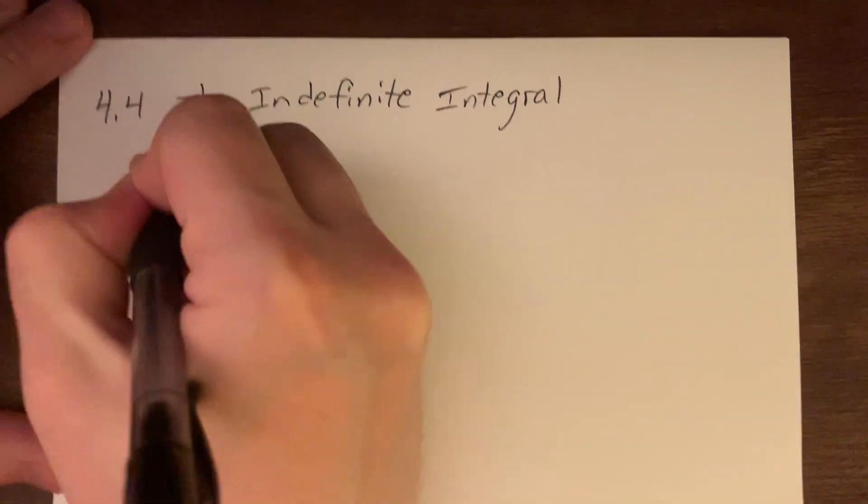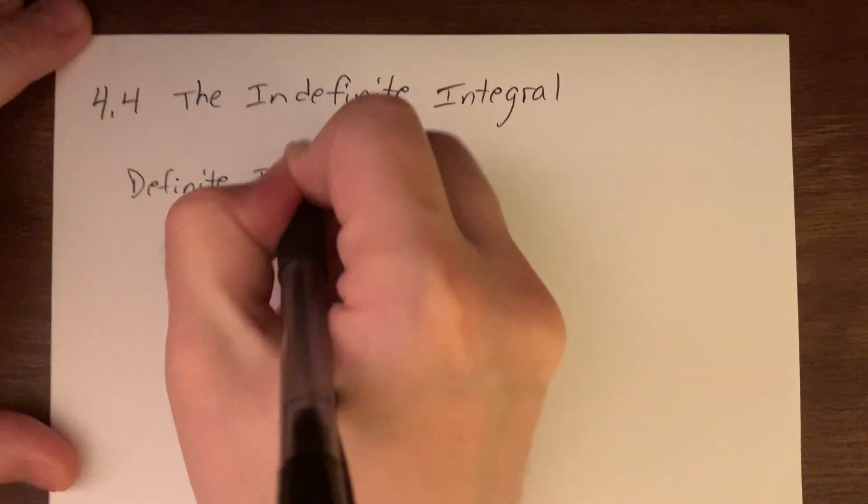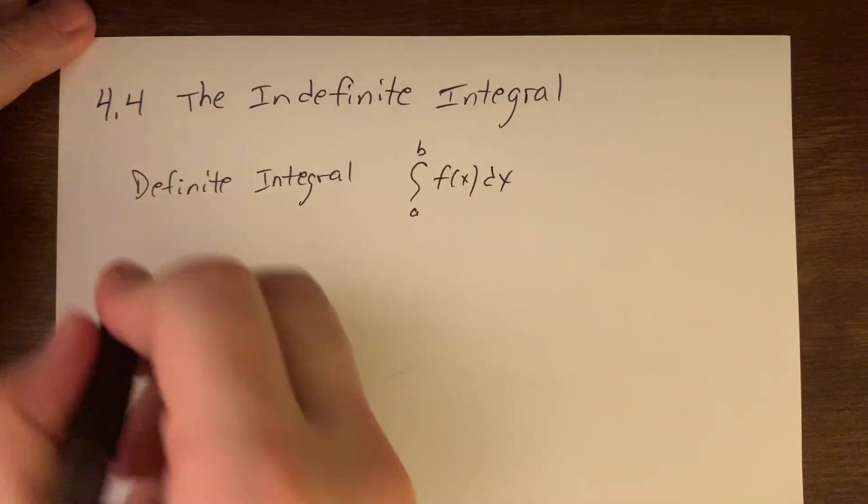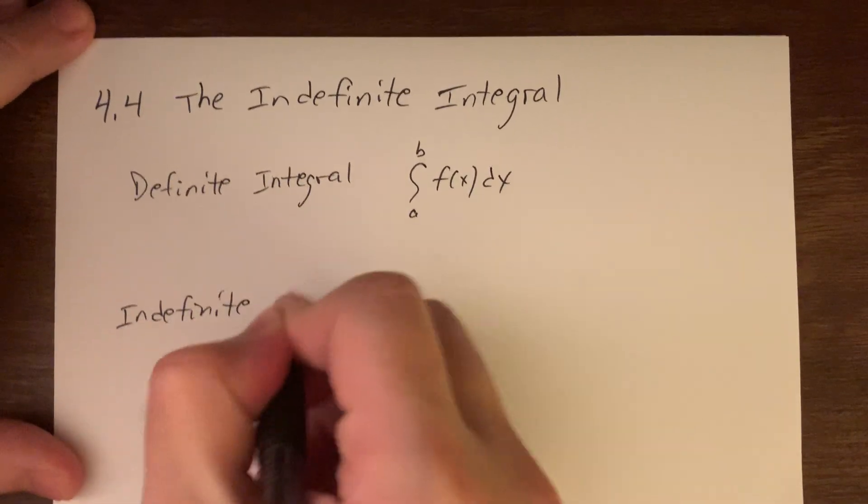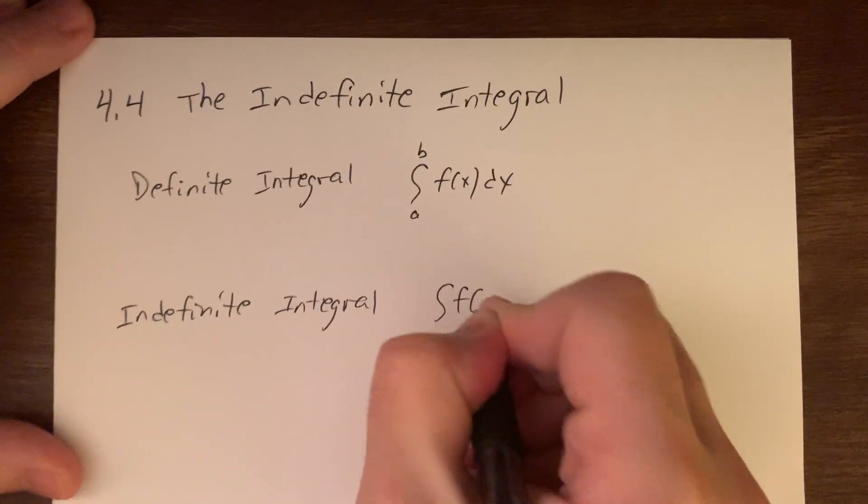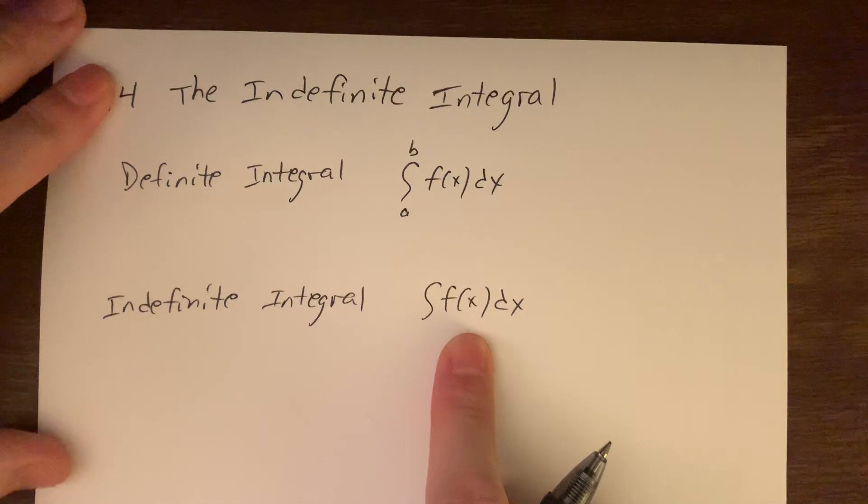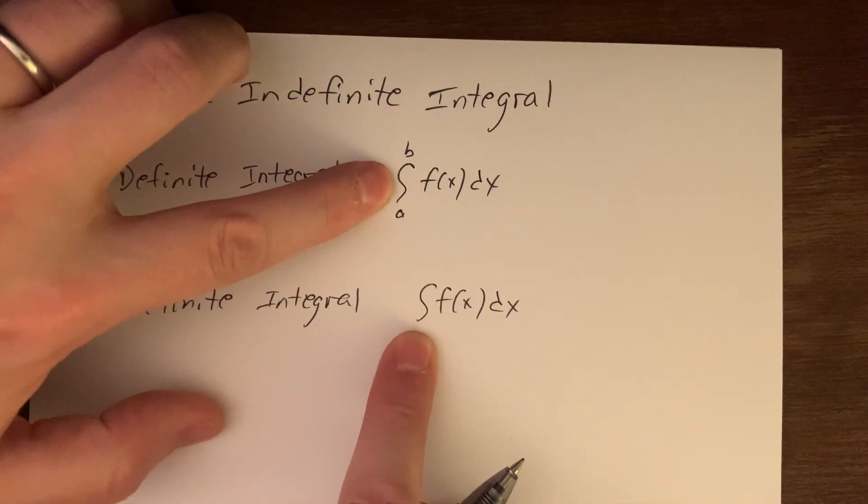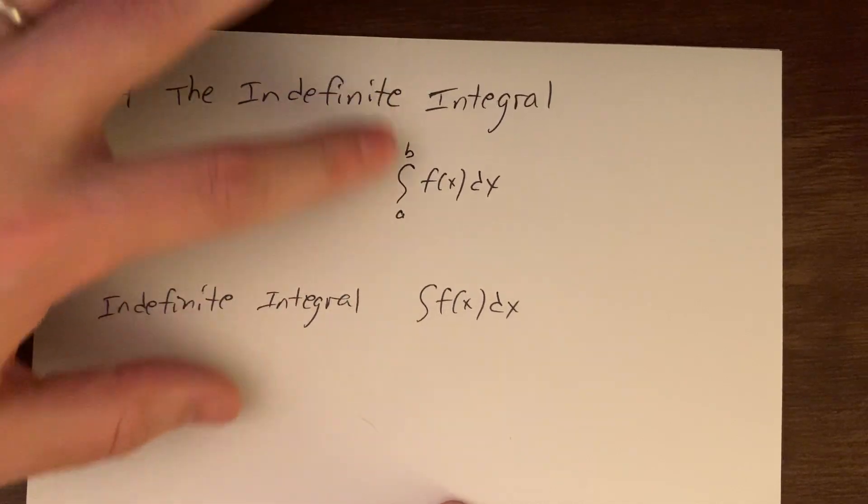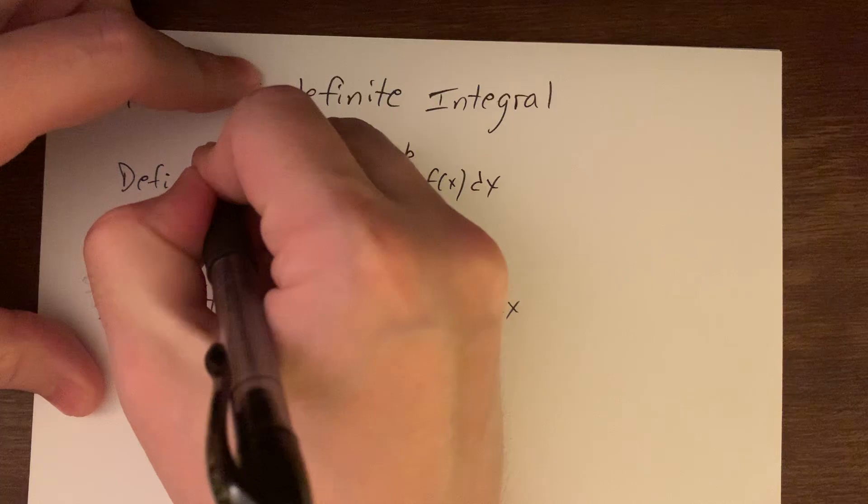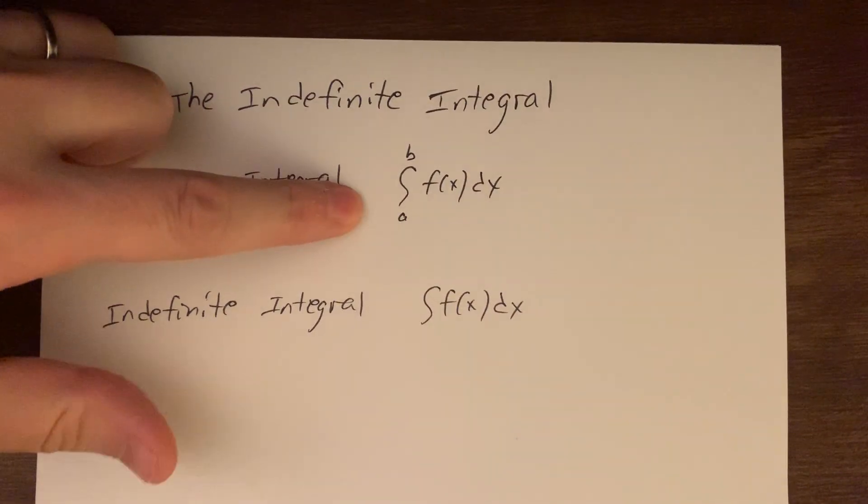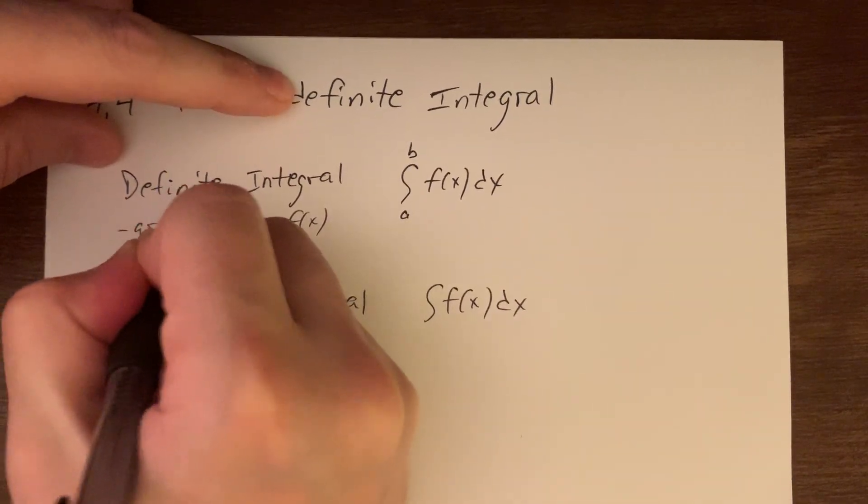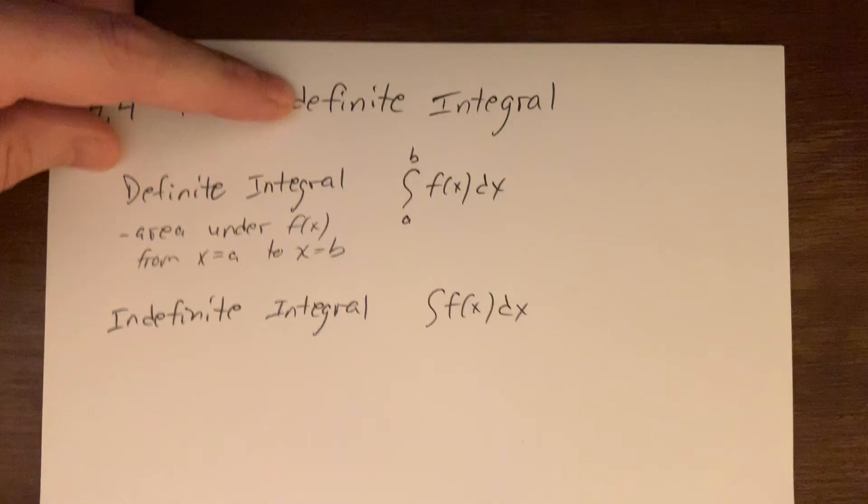We've already established the definite integral as this type of setup. Well, the indefinite integral looks very similar and would just be this. As far as just looking, the difference is they're both integrals in that they both use that s symbol, but for the definite integral, we get the bounds on the top and bottom. That's what makes it the definite integral. And we already established that this idea represents the area under the function f(x) from x equals a to x equals b.